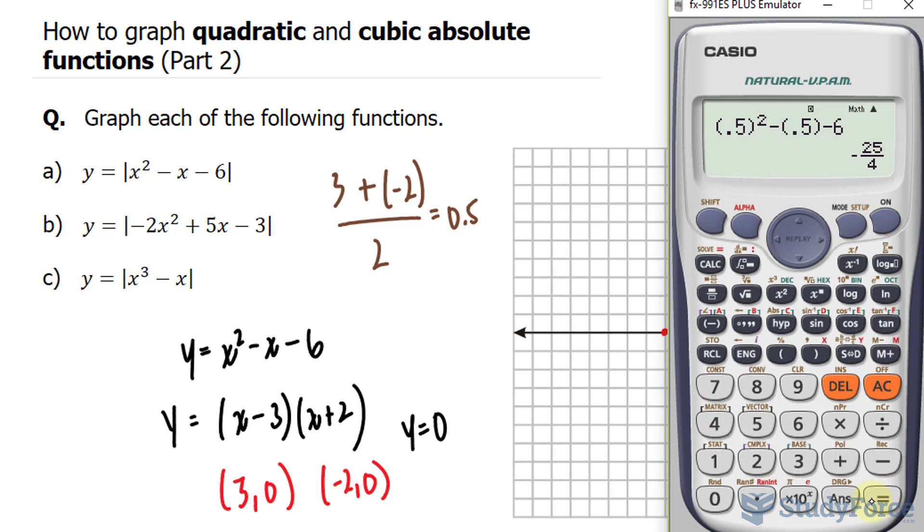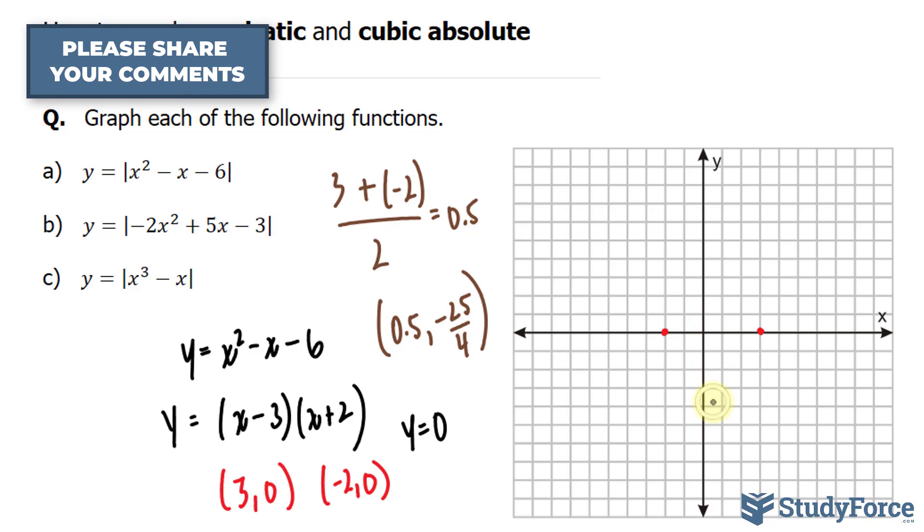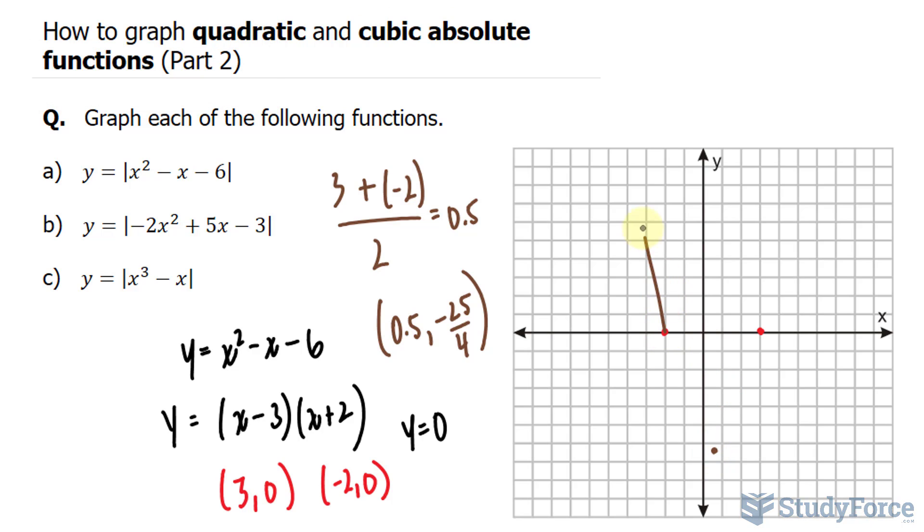Let's go ahead and substitute this back into our equation to find the y coordinate. The expression is shown on your screen. You should end up with negative 25 over 4. Negative 25 over 4 is equivalent to negative 6.25. So starting here, 1, 2, 3, 4, 5, 6, and a quarter down, and we'll connect these. We'll sketch this as best as we can. And that represents our graph.